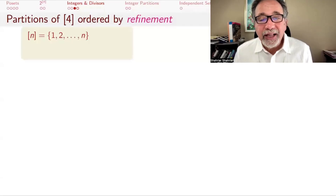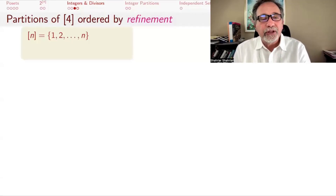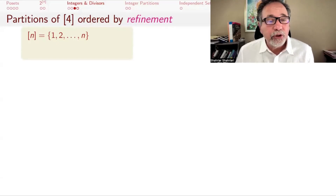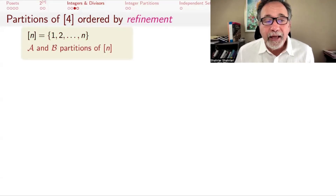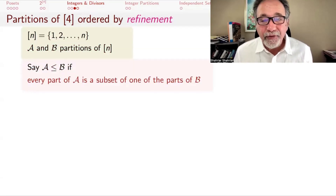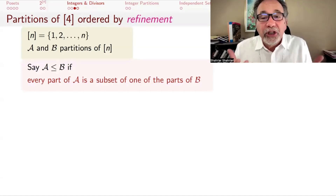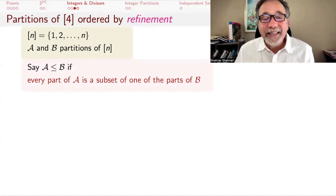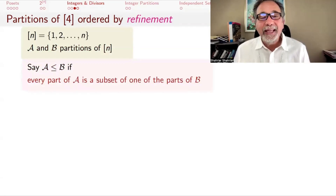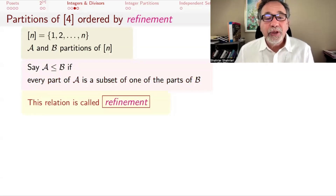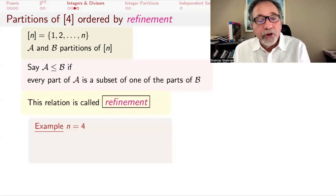In combinatorics, there are many things we can think of in terms of posets. For example, consider partitions of a finite set. If you take the set {1,...,n} and let A and B be two partitions of it, we say that A ≤ B if every part of A is a subset of one of the parts of B. This relation is called refinement.